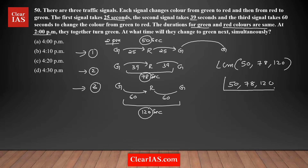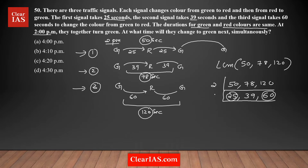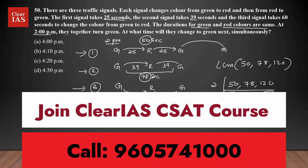I'll use the division method to find the LCM of 50, 78, and 120. Dividing all three by 2: 50 ÷ 2 = 25, 78 ÷ 2 = 39, 120 ÷ 2 = 60. Now there's no number that divides all three, but 25 and 60 are both divisible by 5. Dividing those by 5: 25 ÷ 5 = 5, 39 stays as is, 60 ÷ 5 = 12.